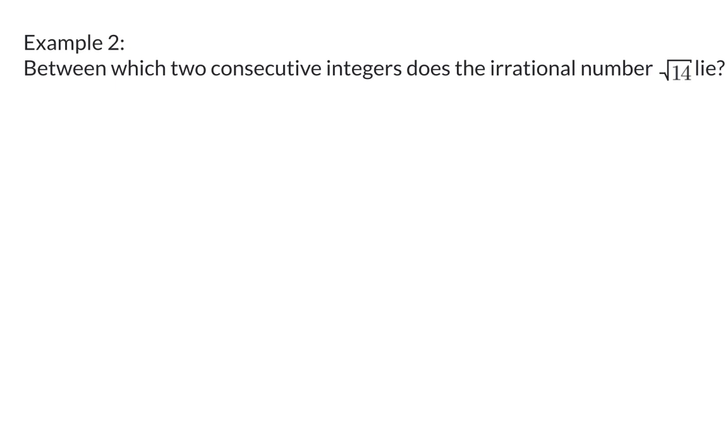Example 2. Between which two consecutive integers does the irrational number square root 14 lie? Here, we have a square root that on the inside has a value that is not a perfect square number.